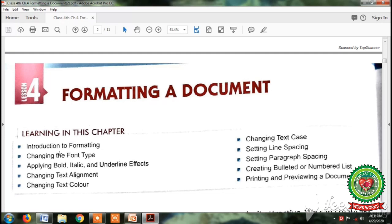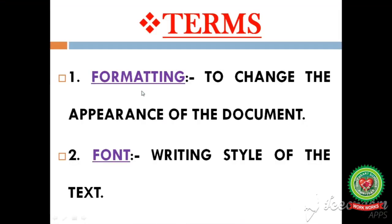The main objectives of this chapter are: introduction to formatting, changing the font type, applying bold, italic and underline effects, changing text alignment, changing text color, changing text case, setting line spacing, setting paragraph spacing, creating bulleted or numbered lists, and printing and previewing a document. Before starting, our first term is formatting — to change the appearance of the document. Second is font — the writing style of the text.